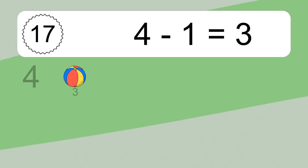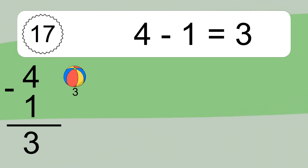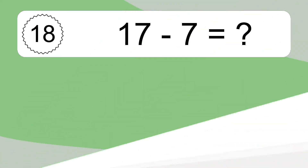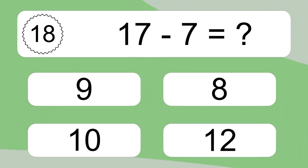4 minus 1 equals what? 4 minus 1 equals 3. Let's count it: 3. 17 minus 7 equals what?